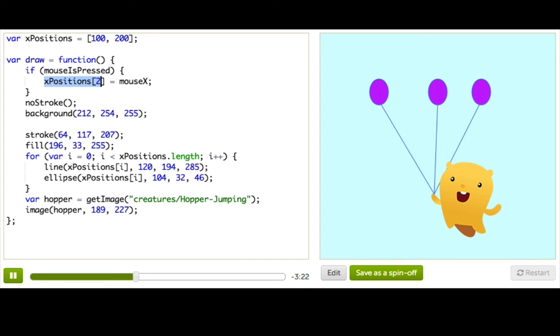So what did this do? This said, xPositions 2 said find this array and find the element in the two spot. And remember, that's the third element because our arrays are zero based. And if you look, there's no third element, right? There's nothing in that spot. So it says find that and then put mouseX in it. Well, since there is nothing there, then it goes from being nothing to being mouseX. And so now our array is three items long. And this for loop down here, when it goes through it, it'll end up drawing that third balloon.